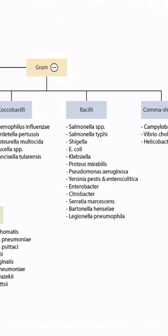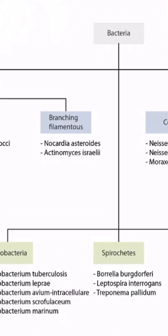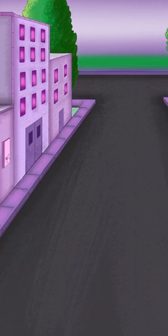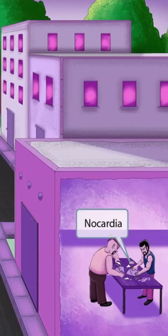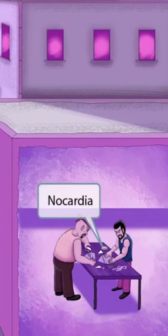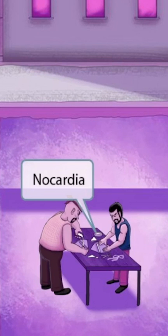This is our bacteria overview figure, and in this video we'll be discussing Nocardia asteroides, which you can see right here. This scene takes place in an urban environment with two terrorists making note card bioweapons. Note card sounds like Nocardia, so it will be our symbol for Nocardia.